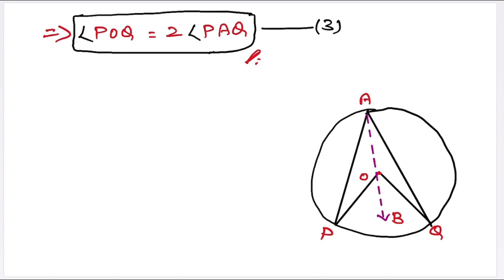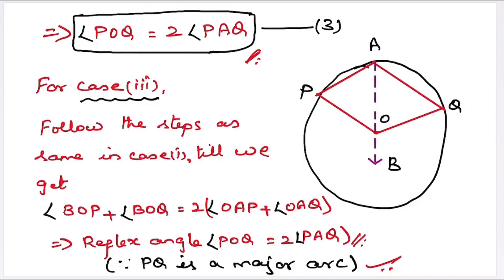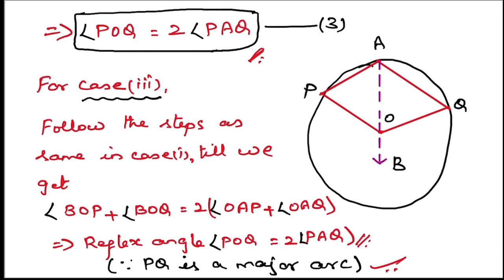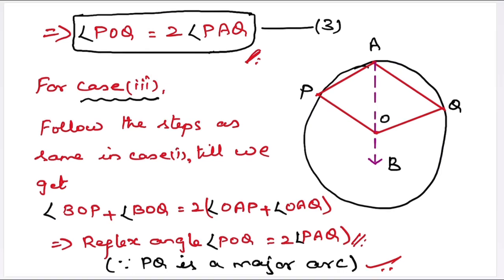So, the first case is proved. It is the same in the second case also. For case 3, the same procedure leads us to angle BOP plus angle BOQ is equal to two times angle OAP plus angle OAQ. Since PQ is a major arc, we have reflex angle POQ is equal to two times angle PAQ. Hence, proved.